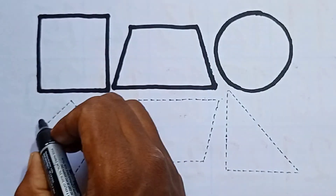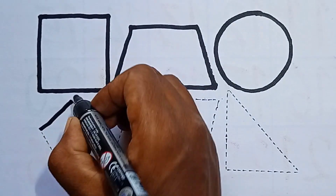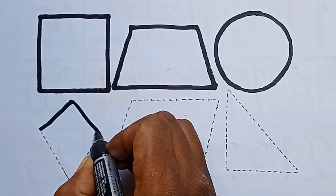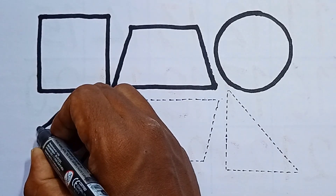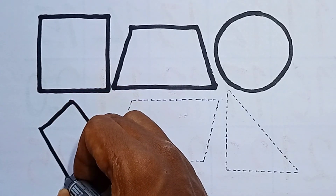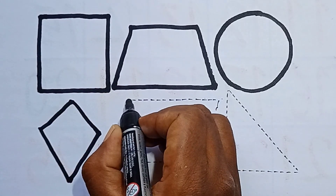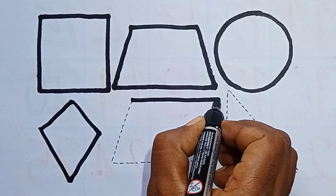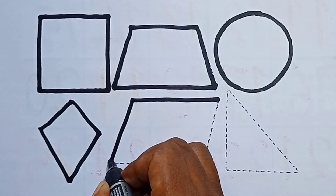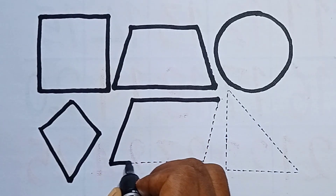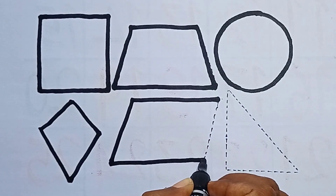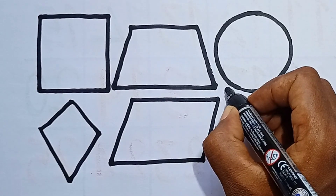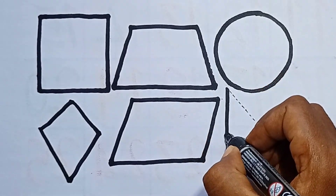And next one, kite — this is kite. Hello kids, say it with me: this is kite. And this is parallelogram. What is this? This is parallelogram. And next one, right triangle.